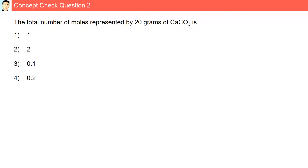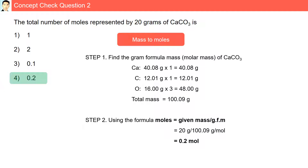Concept check question 2: determine the total number of moles represented by 20 grams of calcium carbonate. The answer is 0.2 moles. The first step was to find the molar mass of CaCO3, which is 100.09 grams per mole. The second step was to use the formula: moles equals given mass divided by gram formula mass. 20 grams divided by 100.09 gives 0.2 moles.